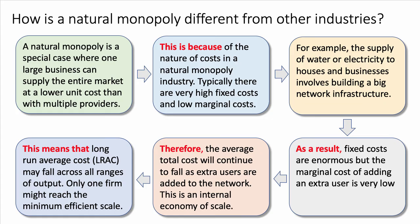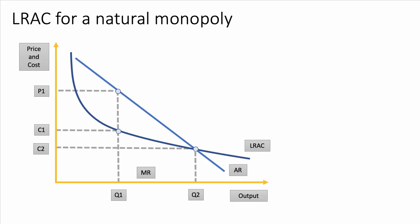This means that long run average cost (LRAC) may fall across all ranges of output to the extent that only one firm might reach the minimum efficient scale of production. Notice in this chain of reasoning, four connective phrases are used: 'this is because,' 'as a result,' 'therefore,' and 'this means that.' Looking at the diagram, the key to a natural monopoly is the shape of the average cost curve — the falling LRAC curve means that it may be more productively efficient to have a single provider of a national infrastructure.